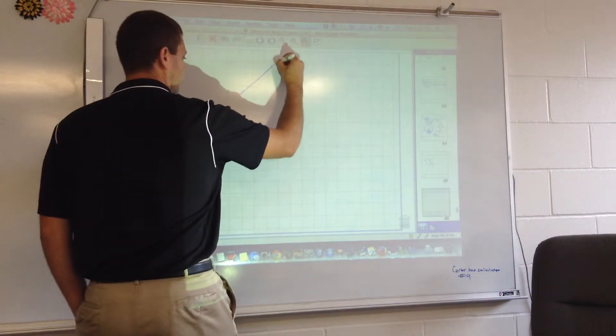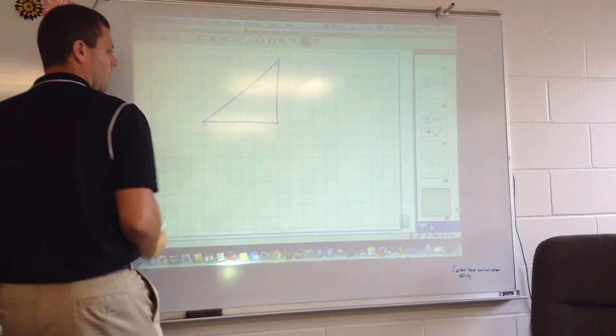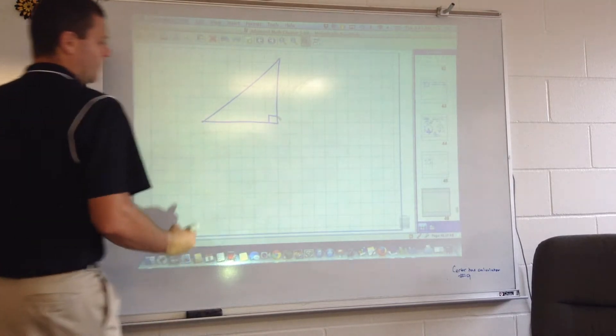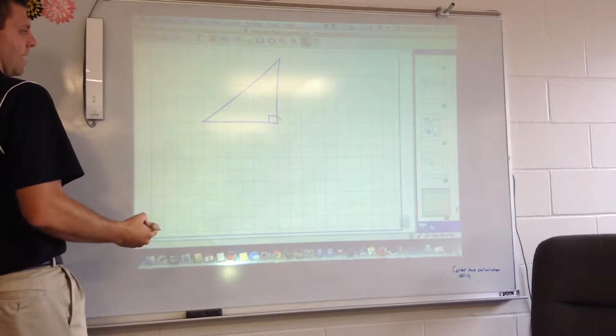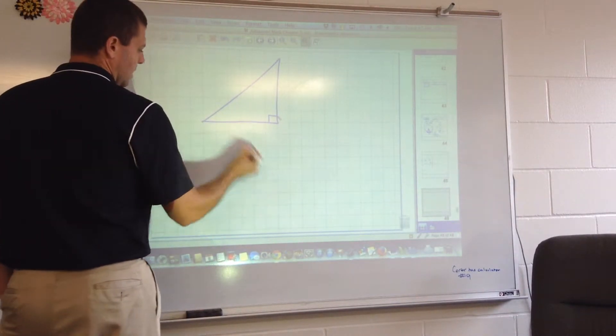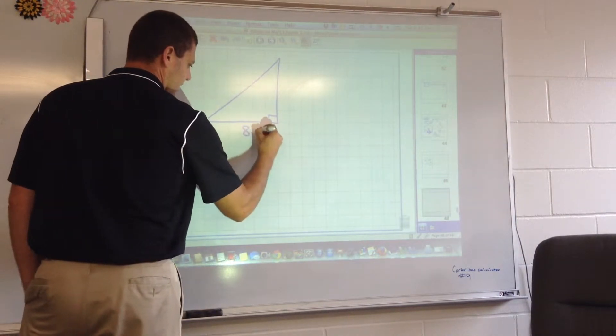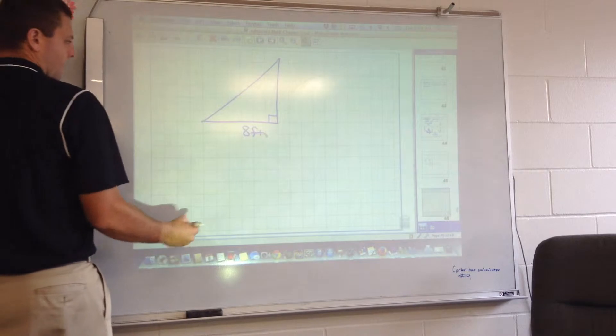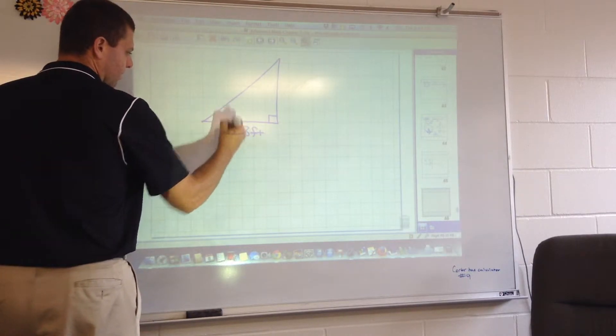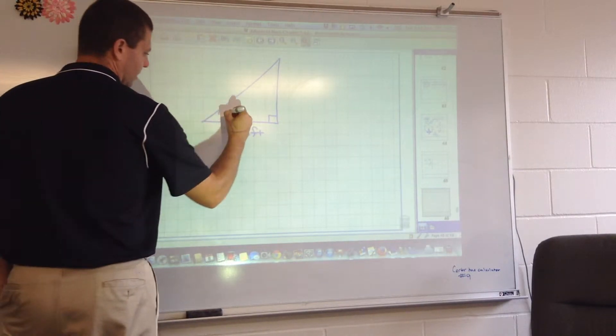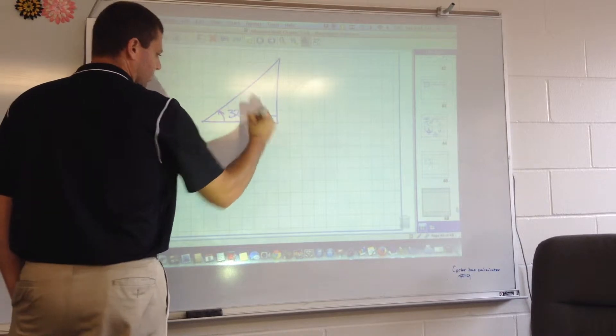If I have a right triangle, and I know that this distance right here is 8 feet, and I know that this angle right here is, let's say, 32 degrees.